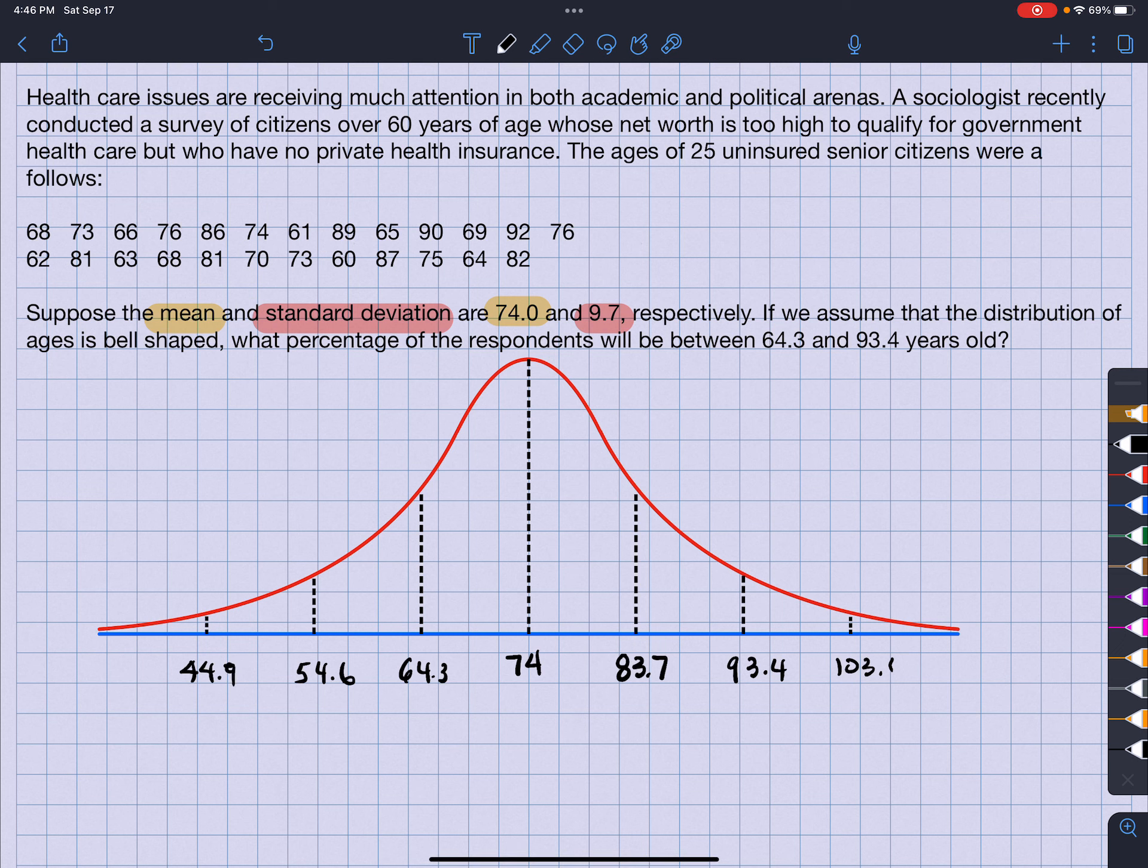So if I remember correctly, we have percentages written in all these areas here, right? Let me think. It's 34, 34, then 13.5, 13.5, and then 2.35, 2.35, and then 0.15 and 0.15.